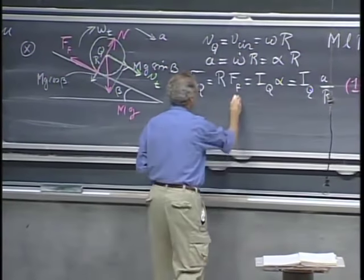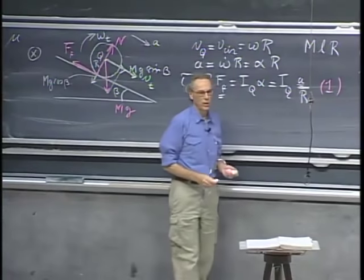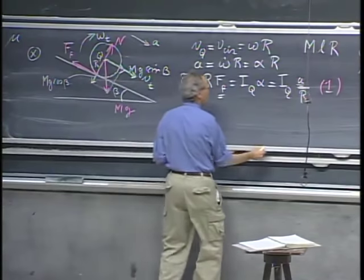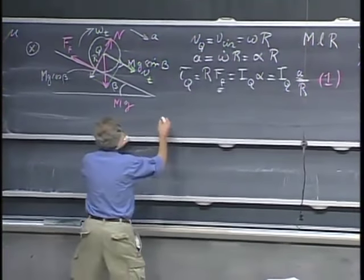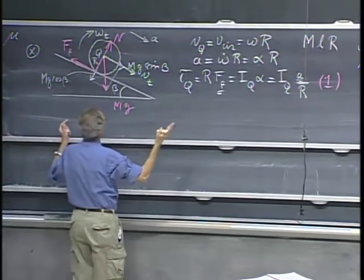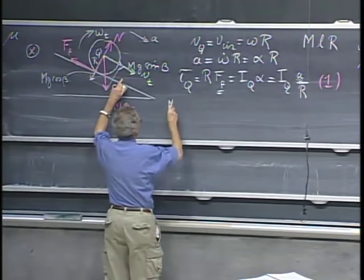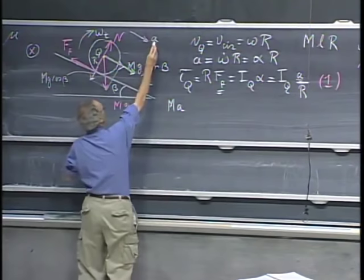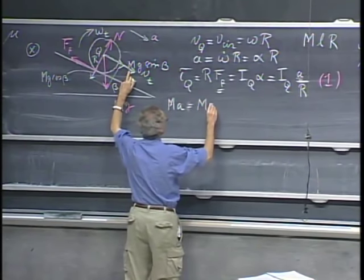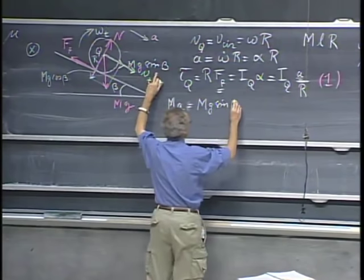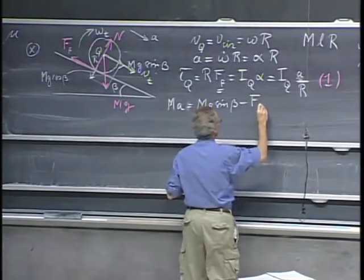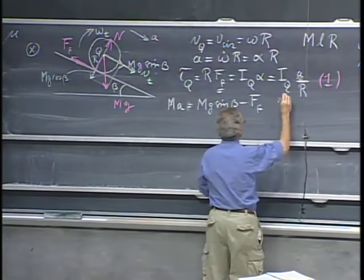I have as unknowns the frictional force and a, so I cannot solve for both — I need another equation. The next equation is Newton's second law, f = ma, for the center of mass at Q. We must have f = ma, so m times the acceleration of Q equals: mg·sin(β), that is the component downhill, minus f_f, the frictional force, which is the component uphill. This is equation number two.